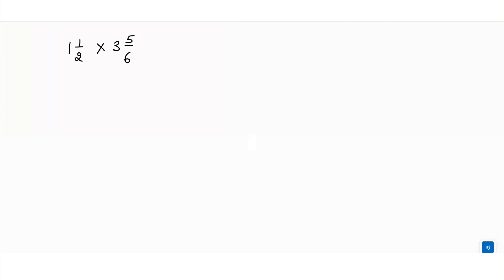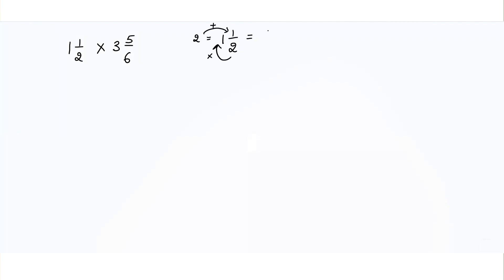For that, we will write 1 and 1/2. To convert, 2 into 1 is equal to 2, then we add this 2 to the numerator which is 1, so 2 plus 1 is equal to 3. We write 3 over 2 as the improper fraction.